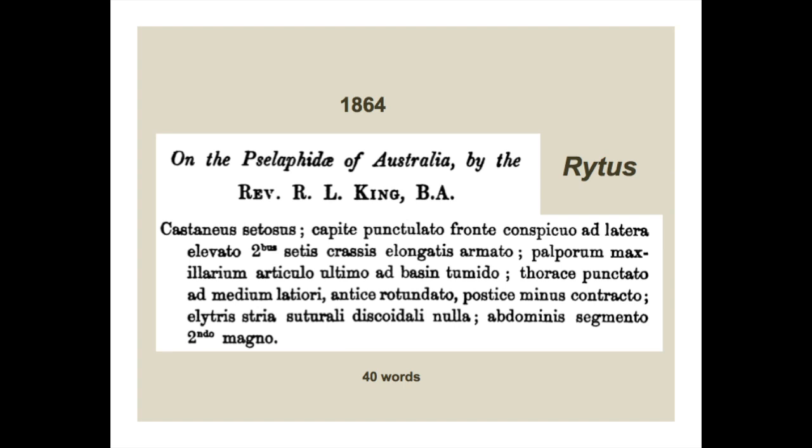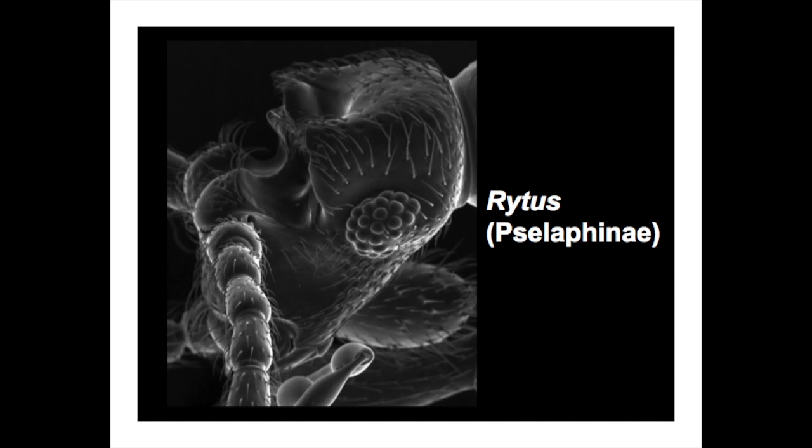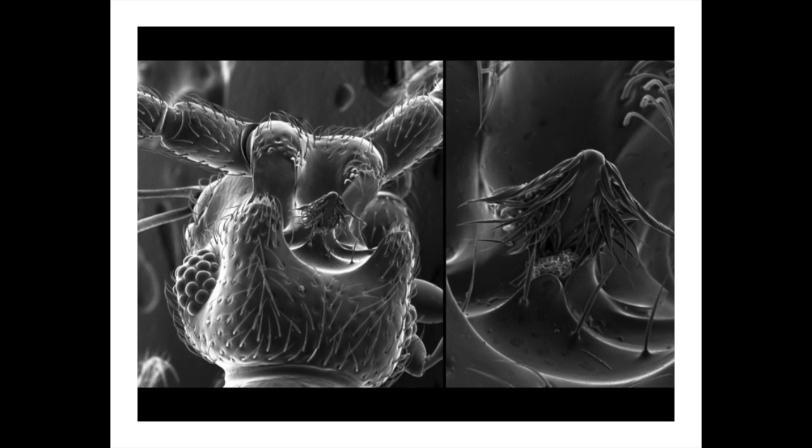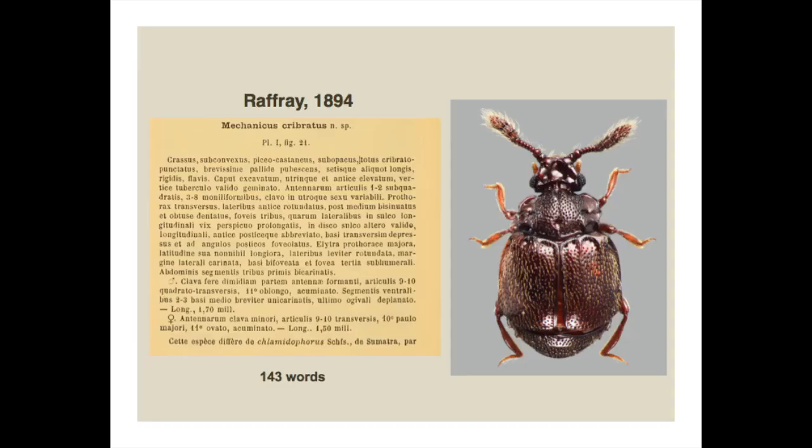Early descriptions of salaphine beetles were often just word-based verbal descriptions, often in Latin. The Reverend King describing a beetle called Ritus from Australia gave a 40-word description with no image. If you read the description, you'd have no idea that Ritus had a head with a gigantic cavity inside it containing a huge spike of unknown function. Just writing a few words about a species is not really doing an organism like this justice.